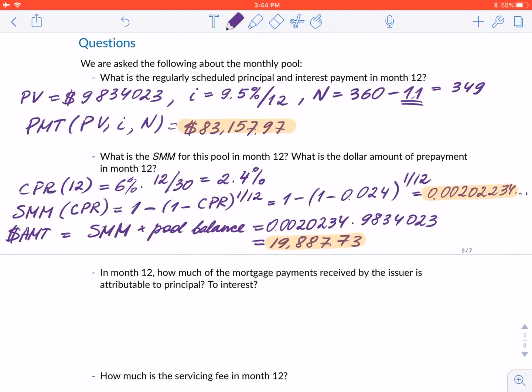Next, in month 12, how much of the mortgage payments received by the issuer is attributable to principal and to interest? We're going to use the payment from the first question. First, let's compute the interest. Interest is the interest rate times the pool balance. Since the investors have the pool balance tied up in this security, they need to get their return on the pool balance. This is 9.5%/12 × $9,834,023 = $77,852.68.